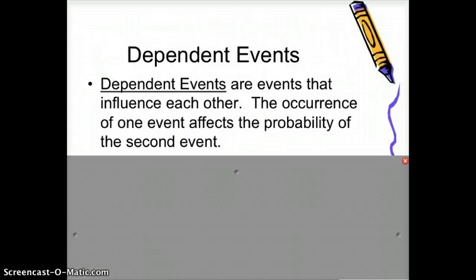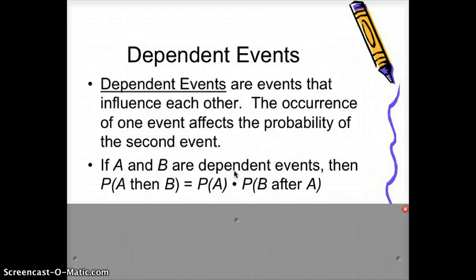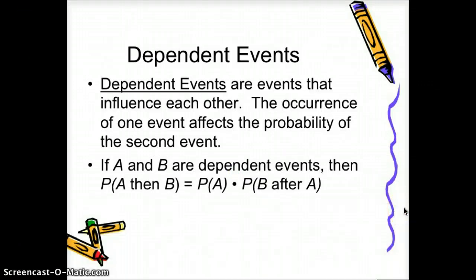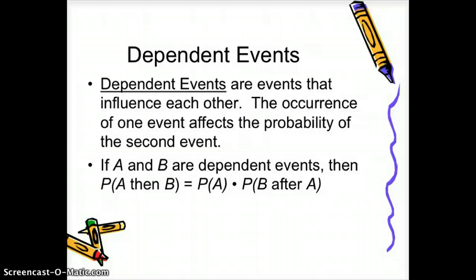Now let's look at dependent events — events that do influence each other. Whatever happens the first time affects the probability of the second event. Solving probability of dependent events is similar to independent events in that we multiply probabilities, but if A and B are dependent events, the probability of A then B equals the probability of A times the probability of B after A has occurred.